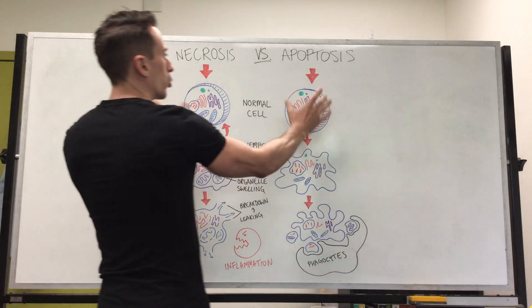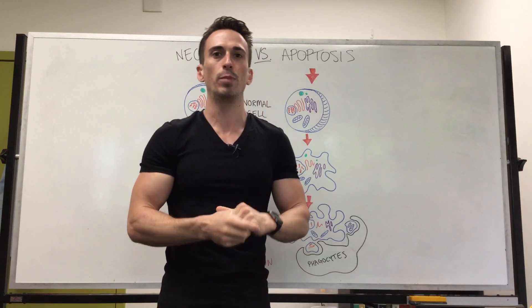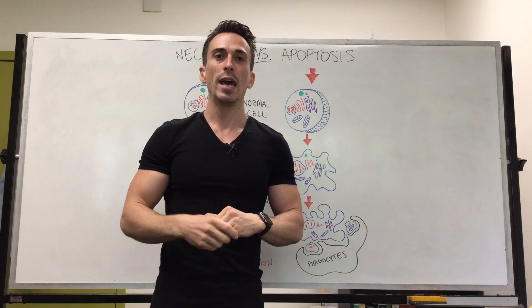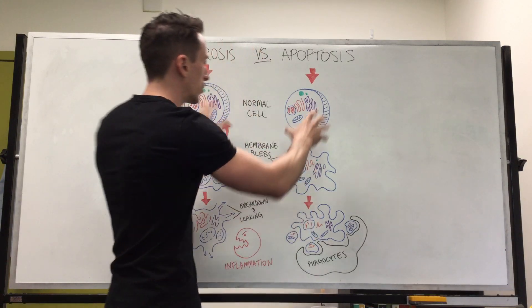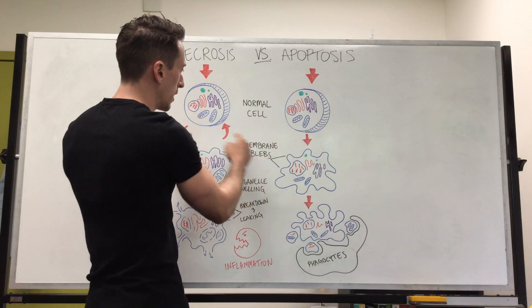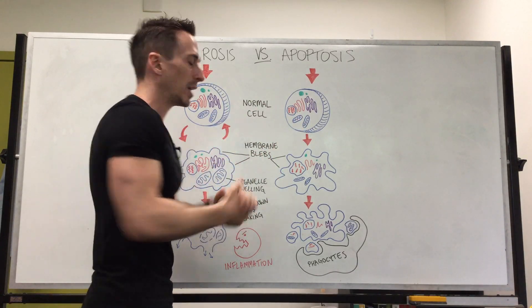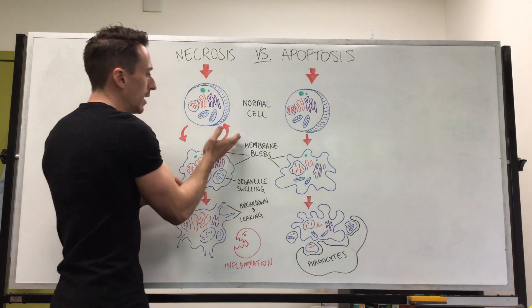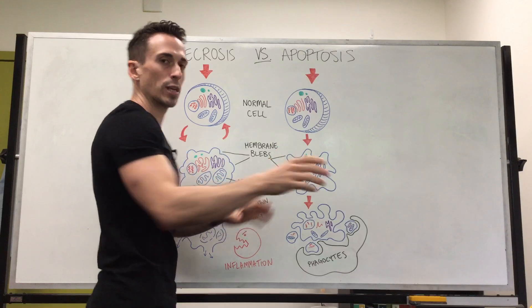Firstly, if we begin with a normal cell and let's say the cell is now damaged — this damage could be oxidative damage, it could be direct injury, it could be chemical damage, or multiple different types of damage. Once it's damaged beyond the repair process, necrotic cells, if they're damaged not too significantly, can start to repair themselves. Apoptotic cells cannot.